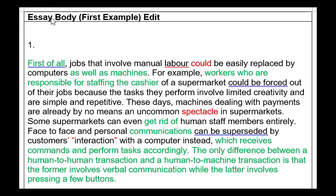Here's an edit of the first essay's body paragraph. 'First of all' — what does this first refer to? Be specific about whether this is the first kind of job, the first danger, or the first potential drawback. Then: 'manual labor could be easily replaced by computers as well as machines' — computers are machines, so do we need both? And if this is a real danger, why use the modal 'could'? Let's get rid of the modal. Also, 'workers who are responsible for staffing the cashier' — a cashier is a person, you don't staff people. You can staff a department or company, but not a person.